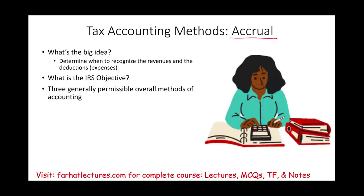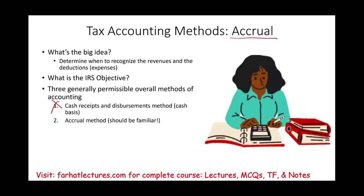There are three permissible overall accounting methods: the cash basis or cash receipts and disbursements, which we already covered; the accrual method, which you should be familiar with if you are an accounting student who has taken financial accounting and intermediate accounting; and the hybrid method, which is a combination of the accrual and cash methods. As we work through the accrual method, we'll notice many exceptions and work through examples to illustrate them.